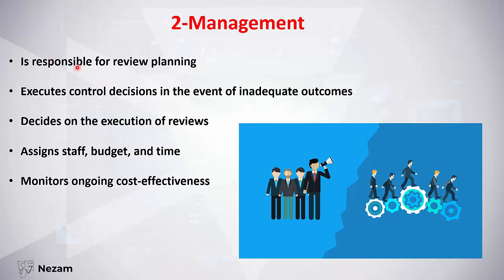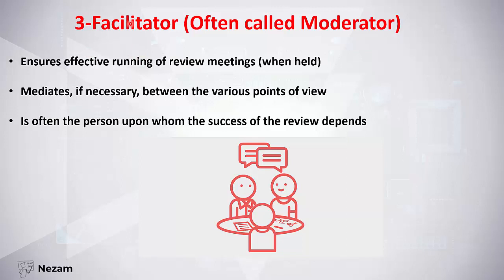Management executes control decisions — deciding when the review will be executed, assigning staff, budget, and time, and monitoring cost effectiveness: whether the investment in the review is effective and whether we are gaining outcomes from it. The third role is the facilitator, also called the moderator. This is the most important person in the review process.